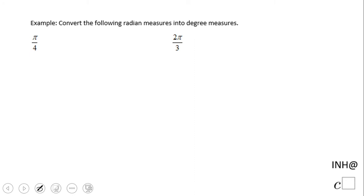Welcome or welcome back to I Need Help at C Square. In this example, we're going to convert two angles, or you can also have arcs, that have a measure in radians into degrees. So the first one says pi over four.